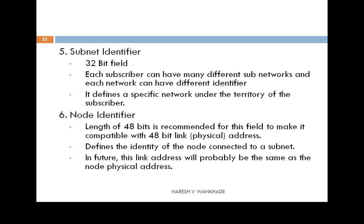Next is the subnet identifier — a 32-bit field is recommended for this. Each subscriber can have many different subnetworks, and each network can have a different identifier. It defines a specific network under the territory of a subscriber. The last one is the node identifier, for which 48 bits is recommended.